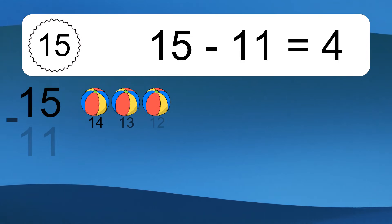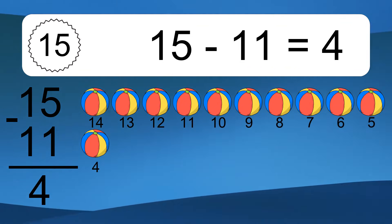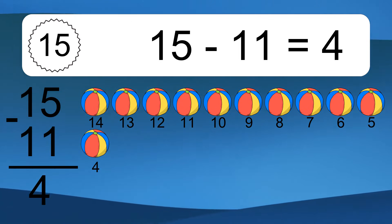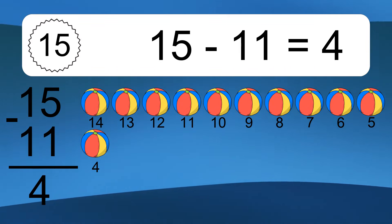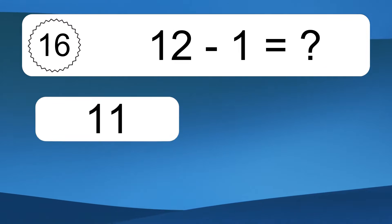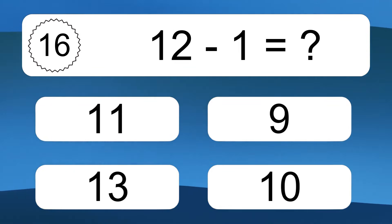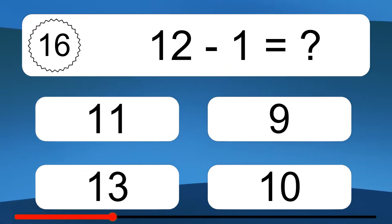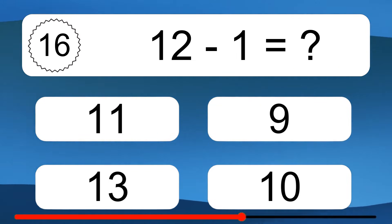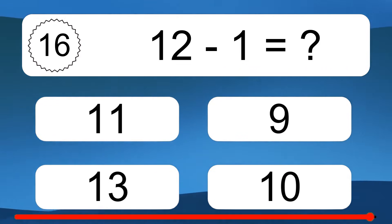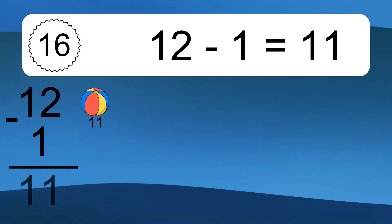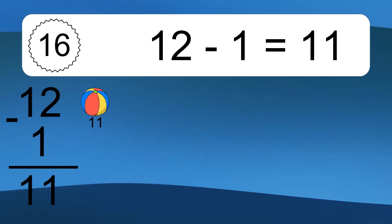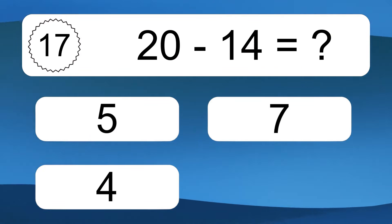15 minus 11 equals 4. Let's count it: 14, 13, 12, 11, 10, 9, 8, 7, 6, 5, 4. 12 minus 1 equals what? 12 minus 1 equals 11. Let's count it: 11. 20 minus 14 equals what?